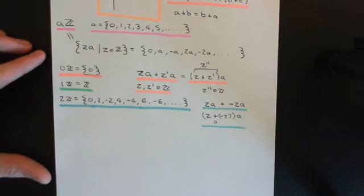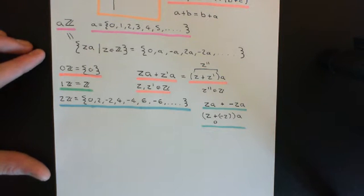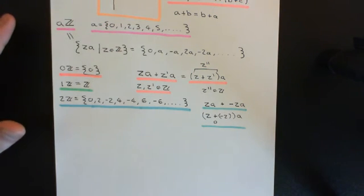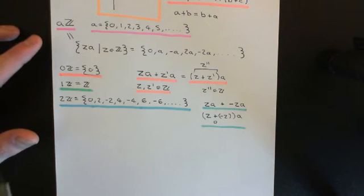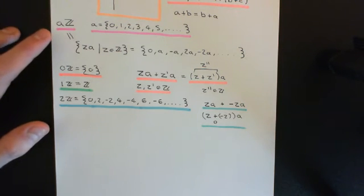Welcome back to this next video in which we are discussing subgroups. We're currently in the process of discussing the subgroups of the group of integers under addition. So far what I've done is shown you a whole bunch of subgroups of this group of integers under addition, and this whole bunch of subgroups are of this form: a times Z, where a is some non-negative integer — meaning all integer multiples of a.